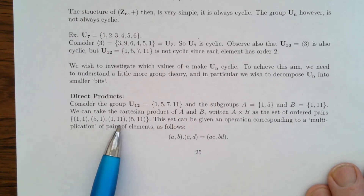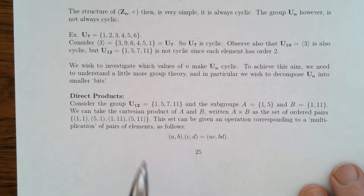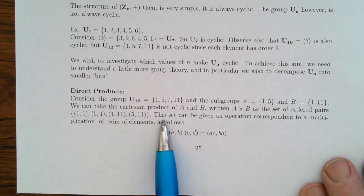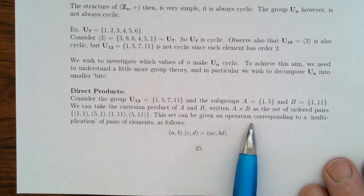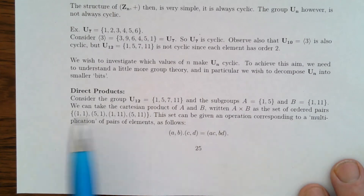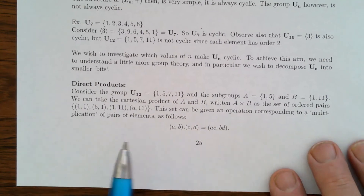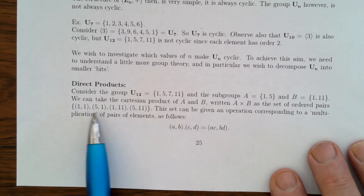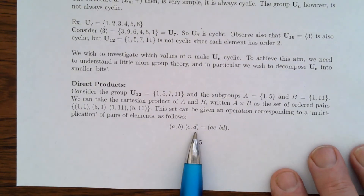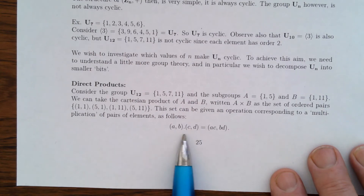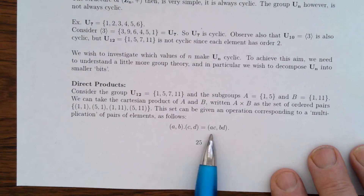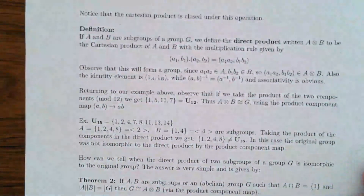This gives us a set of ordered pairs. This set can be given an operation corresponding to a multiplication of pairs of elements: if we want to multiply two ordered pairs, we define that multiplication coordinate-wise — multiply the first elements together (a times c) and multiply the second elements together — giving another ordered pair. It's fairly clear that the Cartesian product is then closed under this operation.